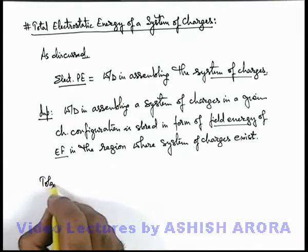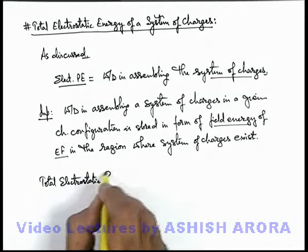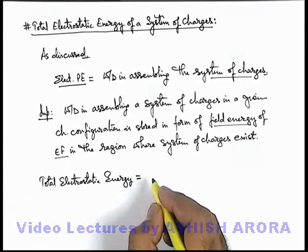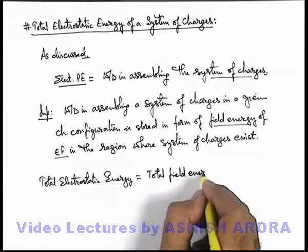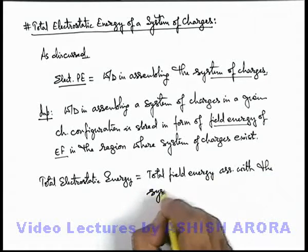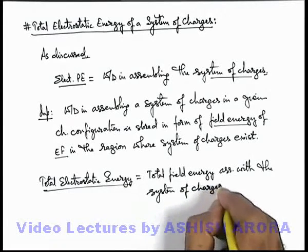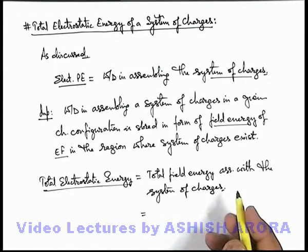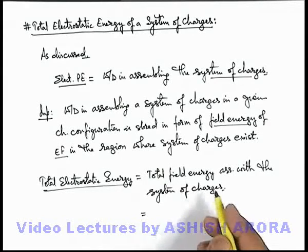So we can say the total electrostatic energy of a system can be given in two ways. One way of calculating the total electrostatic energy is the total field energy associated with the system of charges. The other way is we can simply find out the total work done in assembling the system, where first we supply charges to the bodies and then the bodies are assembled further.